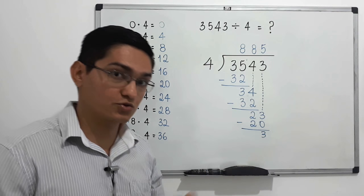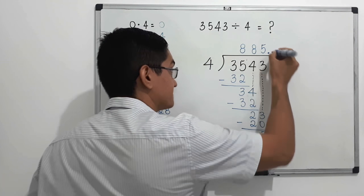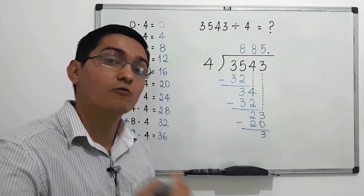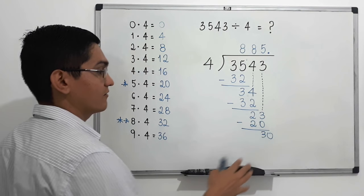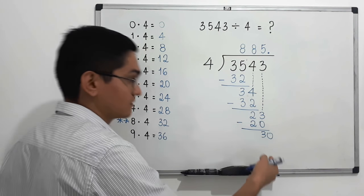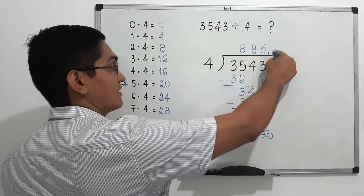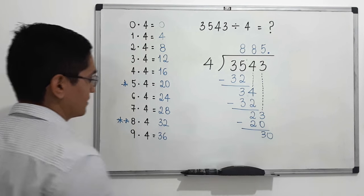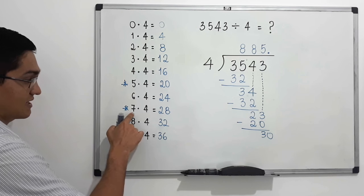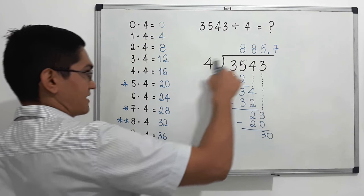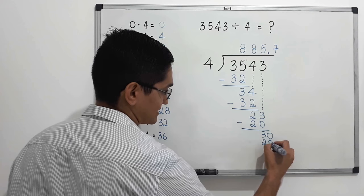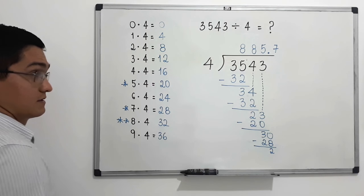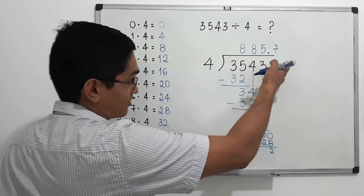But if you want to continue with this division as a decimal, you put a little dot here. Since you have no more digits to bring down, you bring down a zero instead. We now have 30. What number from zero to nine do we multiply by four to get 30, or almost 30 but not more than 30? That number is seven, since seven times four equals 28. We write 7 and subtract.